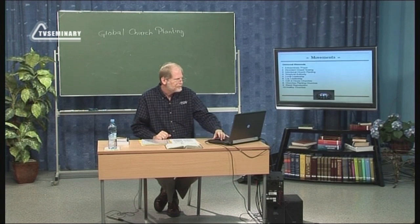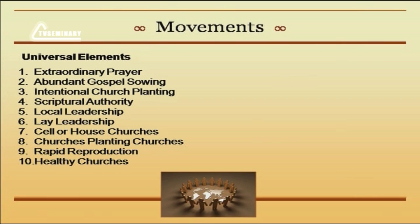Let me summarize a couple of the universal elements listed here: extraordinary prayer; abundant gospel sowing — a lot of preaching of the gospel; intentional church planting, where that's really a goal; scriptural authority, the Bible being central; local leadership — not expatriate people giving leadership to the movement, but local people being raised up; lay leadership — they're not paid workers; cell or house churches — most of those described were house churches, many of them rural; rapid reproduction; and healthy churches.